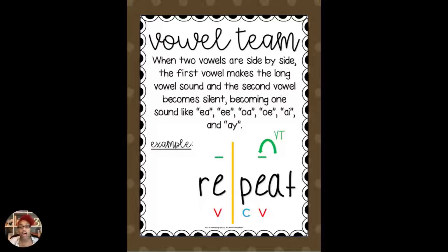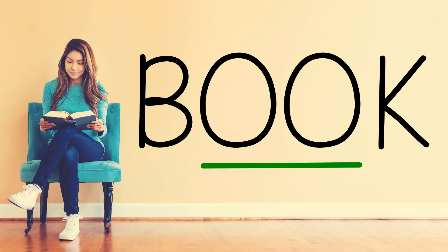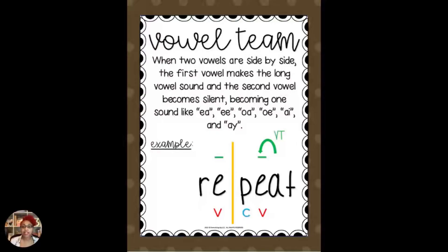There are also unpredictable vowel teams, where the vowel team makes a completely new sound — like the OO vowel team in the word 'book.' Predictable vowel teams, such as those displayed on the screen, are shown in the example 'repeat,' where the E says its long vowel sound and the A becomes silent.